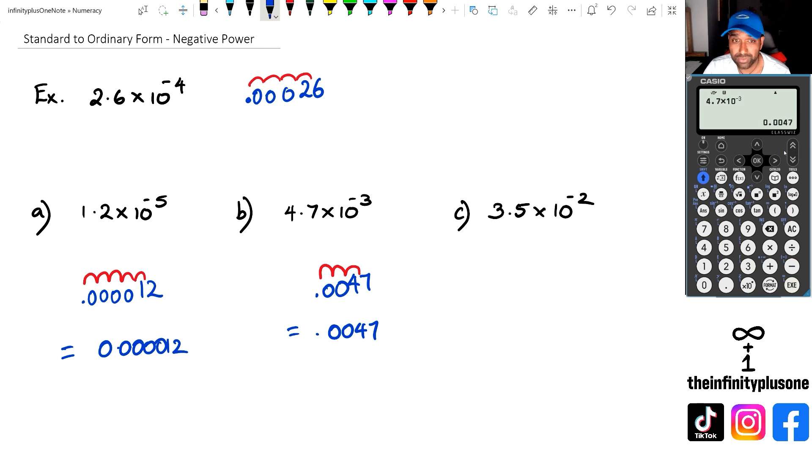And try the last one: 3.5 times 10 to the power of negative 2. So we're going to write down 35, and the decimal point is moving one, two numbers. So I'm going to get 0.035. So 0.035. Now you might be wondering how come in question b) I didn't write 0.0047—I just wrote that as 0.0047, and that's not a problem. You can actually do that.